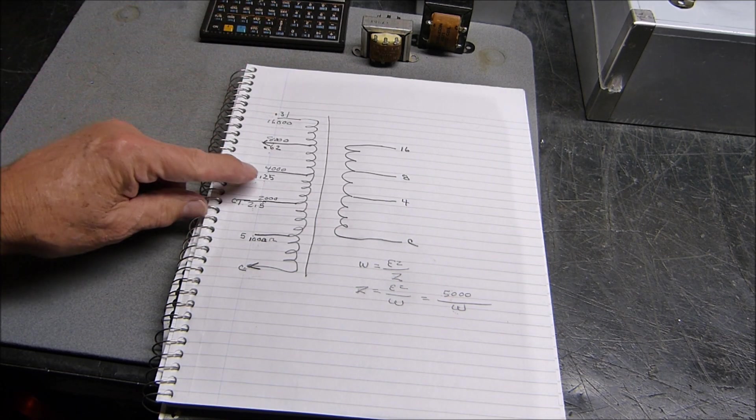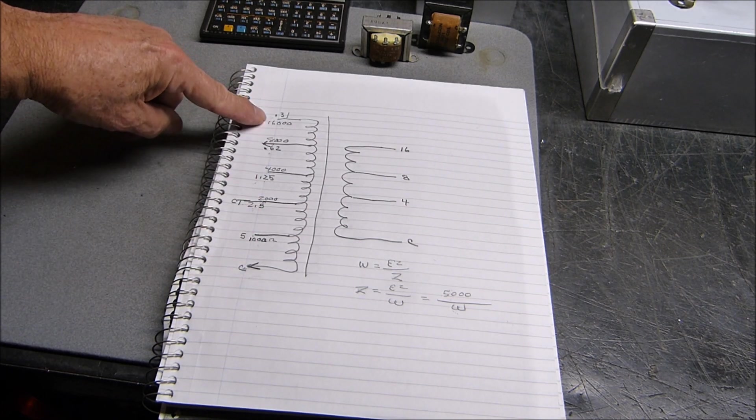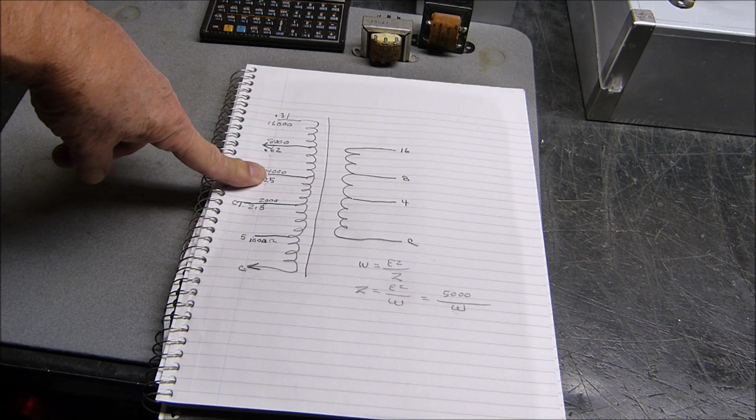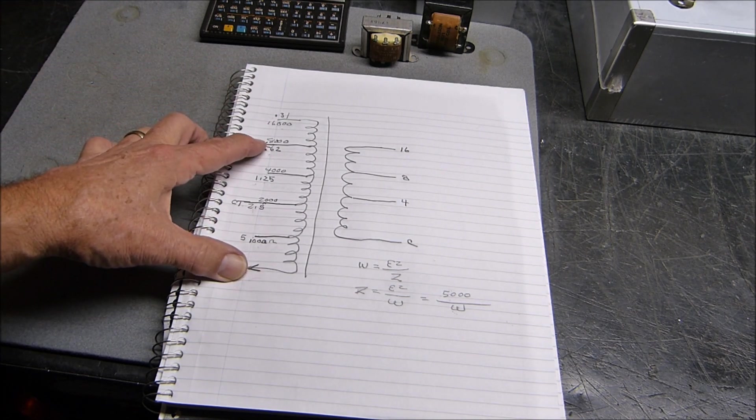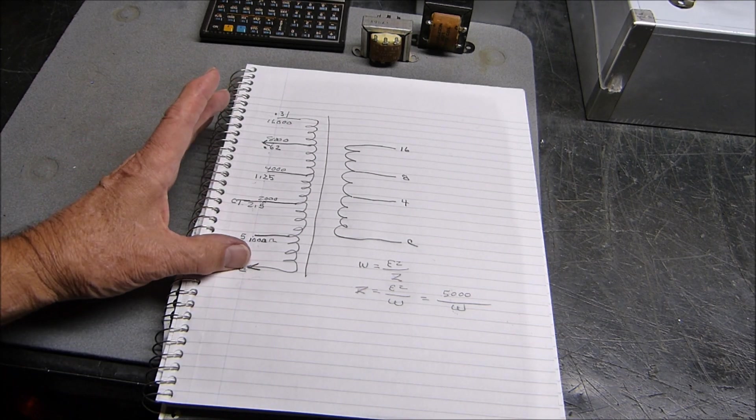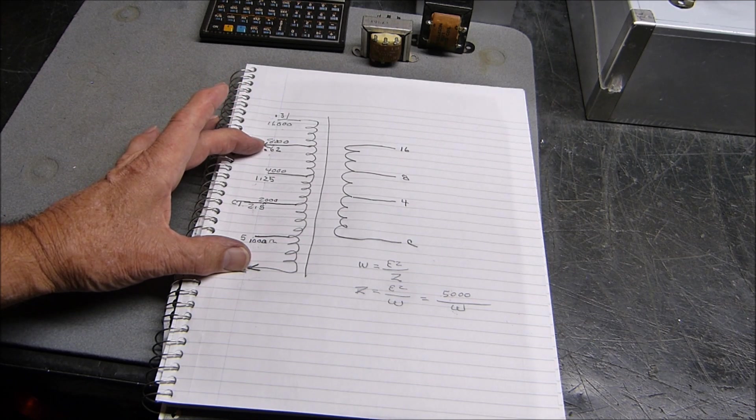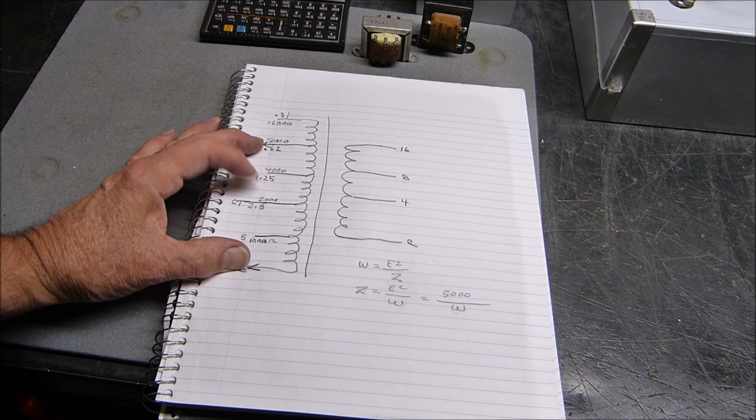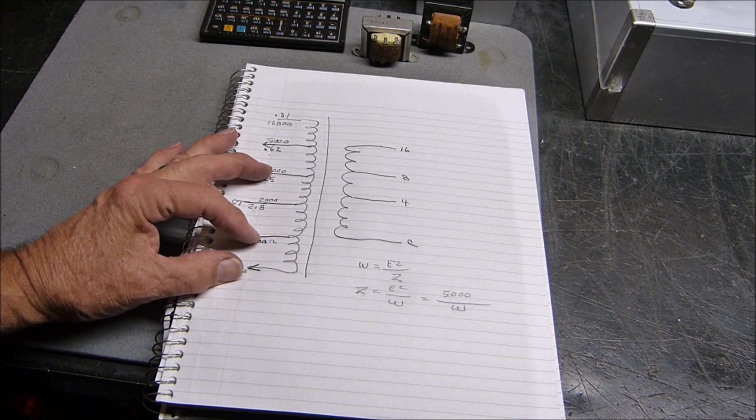You've got a plate here, a plate here, and a center tap right there. So you've got a push-pull transformer. Let's say you want to use the 8,000 ohm one. You put your one plate here on C from your tube, the other plate here. You've got an 8,000 ohm load, so divide that by four. The 2,000 ohm tap right there is the center tap.